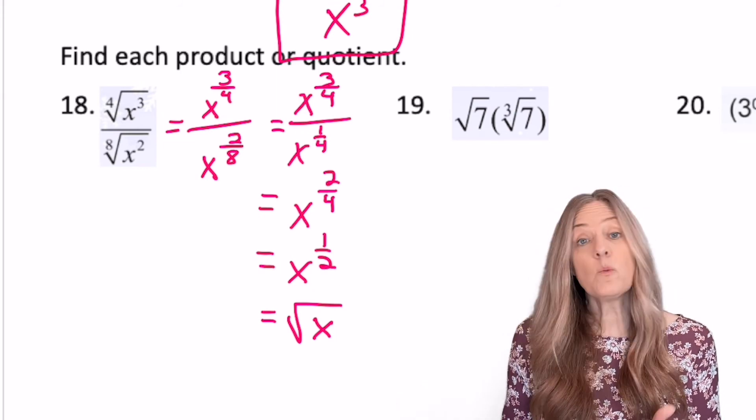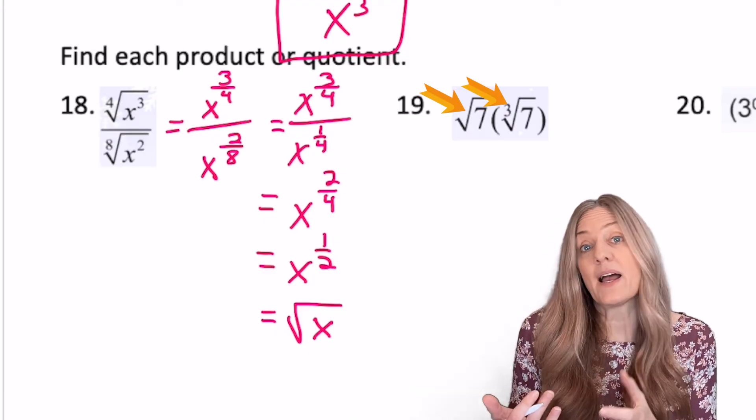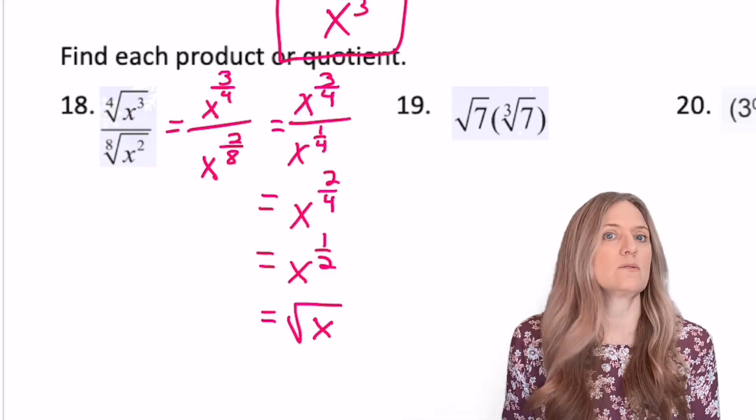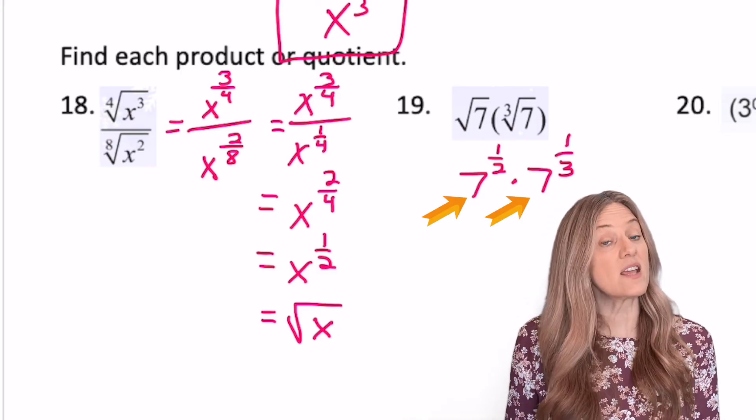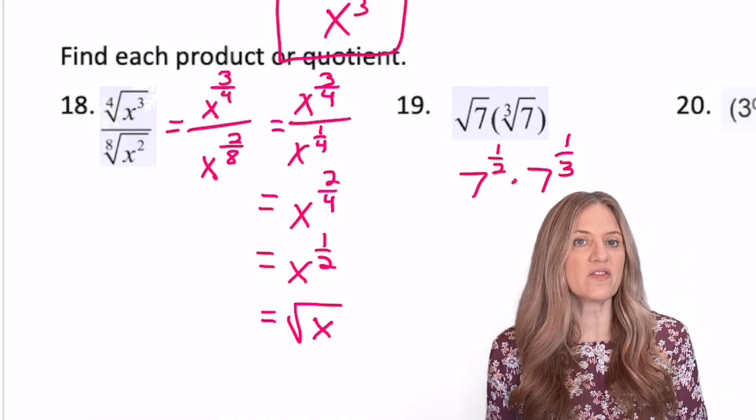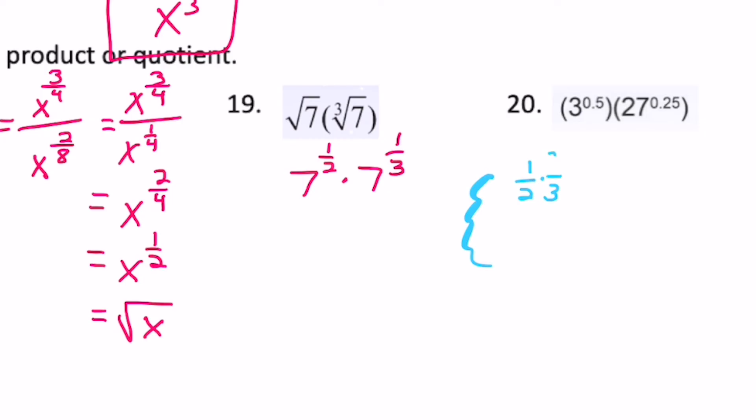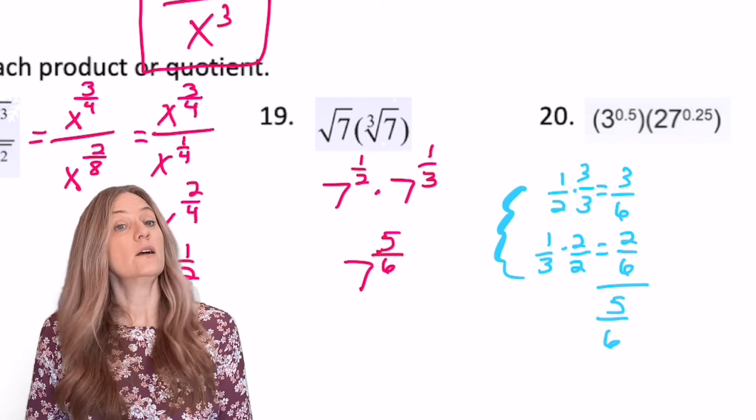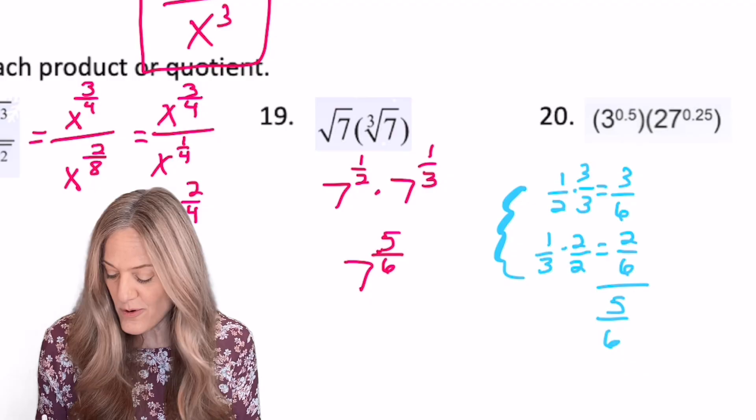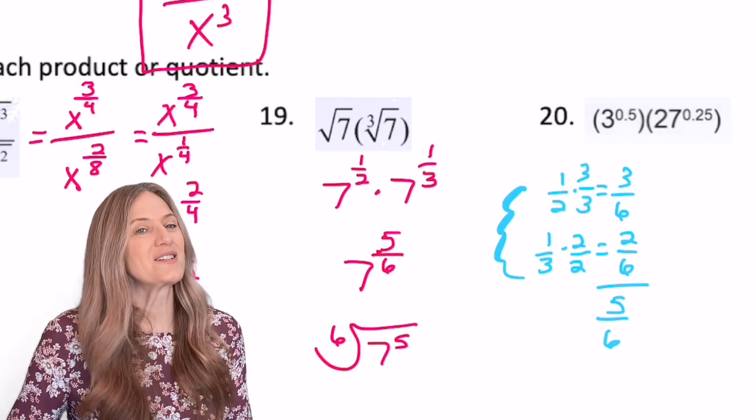Number 19. Similarly, we can't do this. We can't just multiply because the indexes are different. But if we go to rational exponent, maybe we can do something. The bases are the same, therefore we can add exponents. Now we need a common denominator to add 1/2 plus 1/3. You see in my side note that we get 5/6ths. 7 to the 5/6ths, back to radical form. The sixth root of 7 to the fifth power.